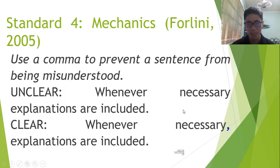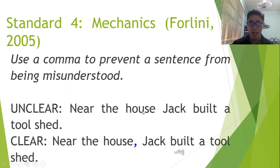Use a comma to prevent a sentence from being misunderstood. As you can see in the first sentence, whenever necessary explanations are included, it would be confusing what the prosody should be. Whenever necessary explanations are included, or is it whenever necessary, comma, explanations are included? As you can see in the second sentence, the comma acts like a pause marker. The reader knows when to pause. Unlike in the first one, the reader will assume, can assume, at least, that necessary explanations should be read continuously without a pause. But that's not the case, so we need to put a comma in between. Same case. Near the house Jack built, or is it near the house Jack built a tool shed? See? The comma prevents misunderstanding.